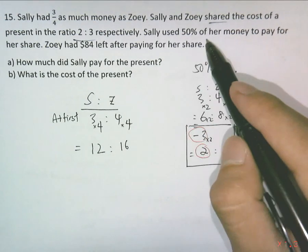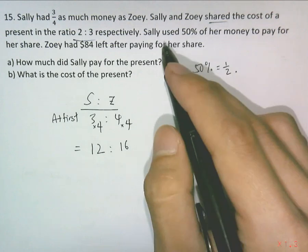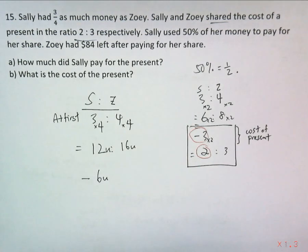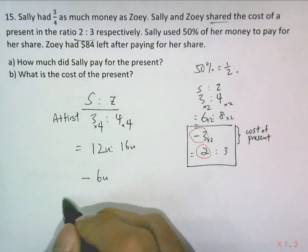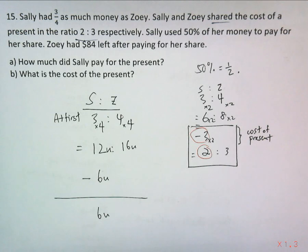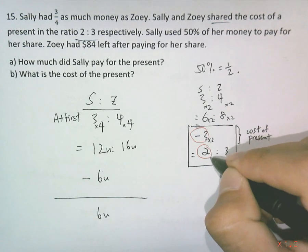Now Sally used half her money, because 50% is half. Sally used half. I'm gonna start with 12 units, so take away 6. So half is 6, so left another half. 6 units left. Keeping in mind, this is what we use the 6 for, because we have to keep this using whole numbers.